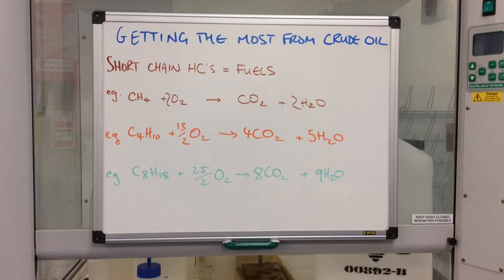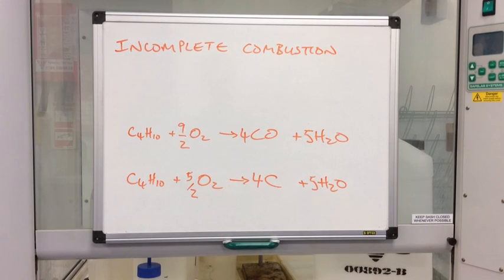The green one is octane using this example to represent the type of reaction that would occur in the combustion of petrol. It's also worth mentioning at this point that if there isn't enough oxygen present we get what's called incomplete combustion.